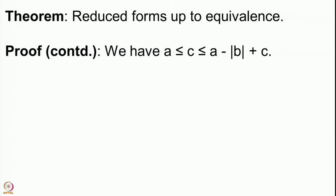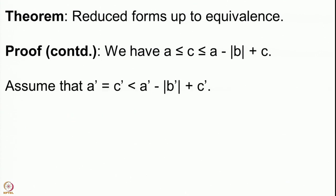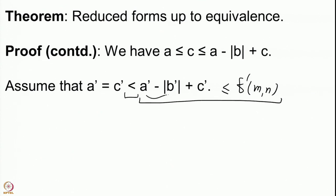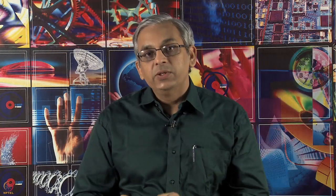For the next case, we assume a prime = c prime but with a strict inequality at the next level: c prime < a prime - |b prime| + c prime. The reason for requiring this strict inequality is that whenever m, n are both nonzero, f prime(m, n) is at least a prime - |b prime| + c prime. So the value c prime can only be attained when one of m or n is zero, meaning the only possibilities for achieving a prime and c prime are the pairs (±1, 0) and (0, ±1).